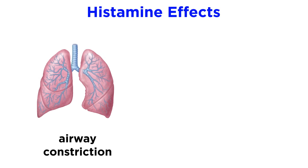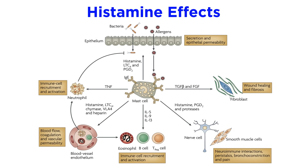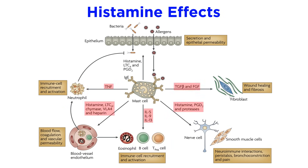Airways constrict in response to histamine, and the contractile force of the heart can be increased as well. Most importantly, histamine release initiates an immune response where other immune cells are recruited, additional pro-inflammatory molecules are released, and inflammation is exacerbated.